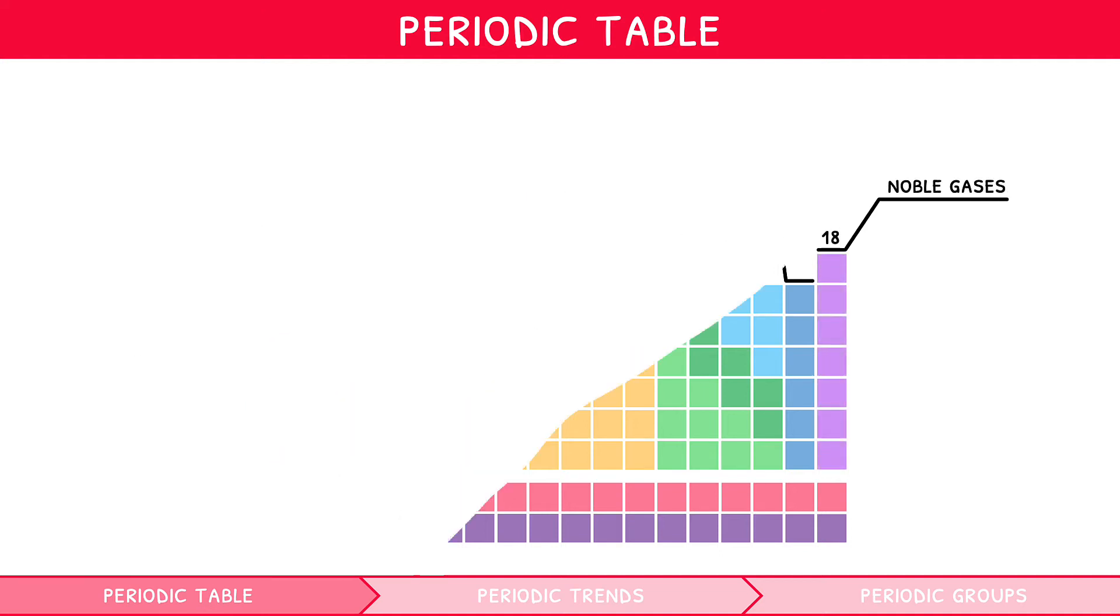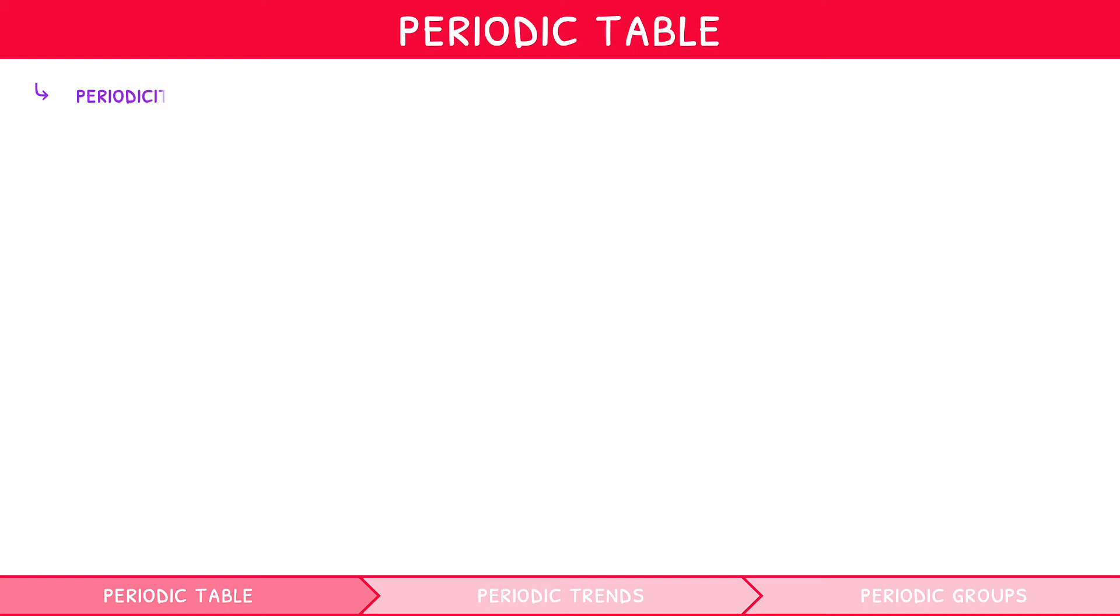When exploring the periodic table, the term periodicity is used to denote the repeating pattern of physical and chemical properties exhibited because of specific periodic trends.